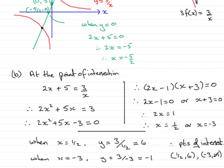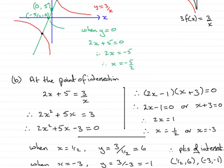A quick glance at the graph confirms these look reasonable: (1/2, 6) is half a unit across and 6 units up — higher than 5 — and (−3, −1) is 3 units left and 1 unit down. The graph isn't drawn to scale but there's a good chance that's right. That brings us to the end of question number 6.